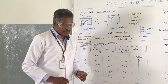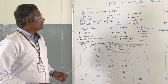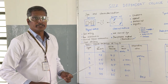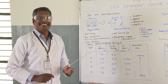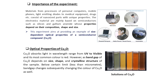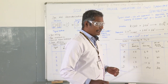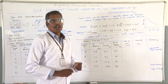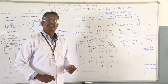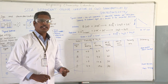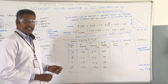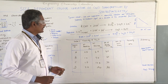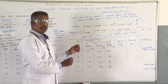Coming back to our experiment, which is about copper oxide nanoparticles — how are these copper oxide nanoparticles prepared? The main source for copper is copper sulphate. The combination of copper sulphate, sodium carbonate, and sodium citrate forms a copper solution.